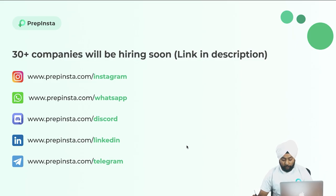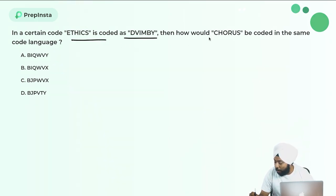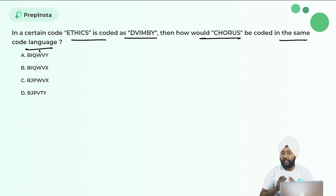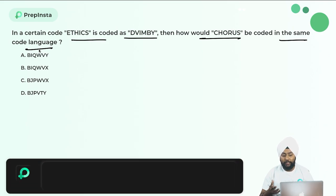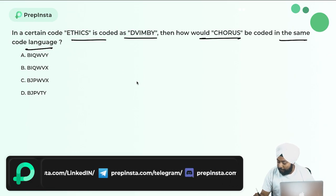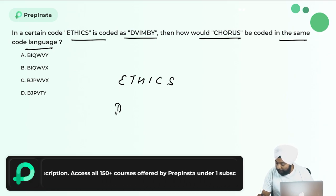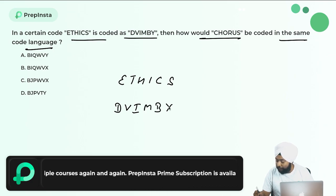The very first question: in a certain code, 'ethics' is coded as DVIMBY. How would 'chorus' be coded in the same code language? Pause the video, try to solve this, find the logic, and then check the correct answer. So let's write E, T, H, I, C, S — ethics — and the code word is D, V, I, M, B, Y.